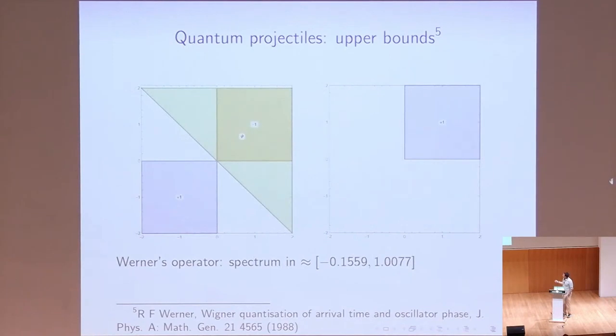So Werner gets a spectrum that goes between minus 0.515559 by diagonalizing it, and one. But, so this already gives an upper bound to the Bracken-Mellory constant because, again, here is a coefficient minus one. So the lower part is the important part.